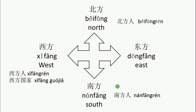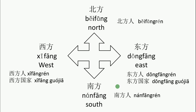But for 西方人, it means westerners — the people from western countries. And 西方国家 means western countries. 东方人 means easterners. 东方国家 means oriental countries.